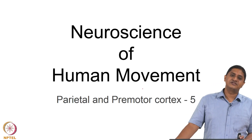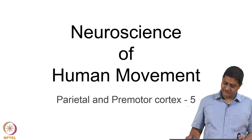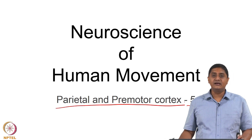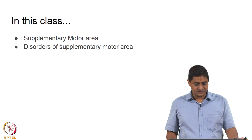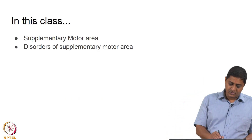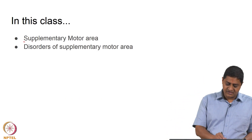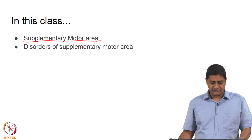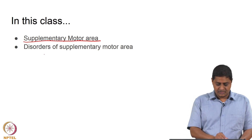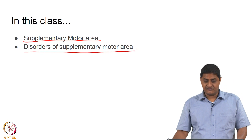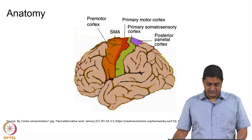Welcome to this class on Neuroscience of Human Movement. This is part 5 of our discussion on Parietal and Premotor Cortex. In this class we will discuss the critical role of the supplementary motor area in motor function and discuss disorders of the supplementary motor area.